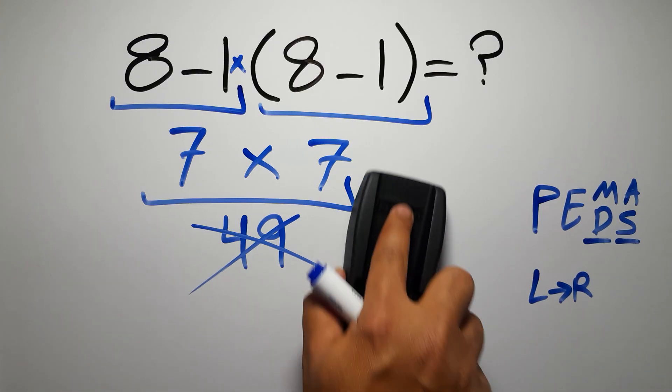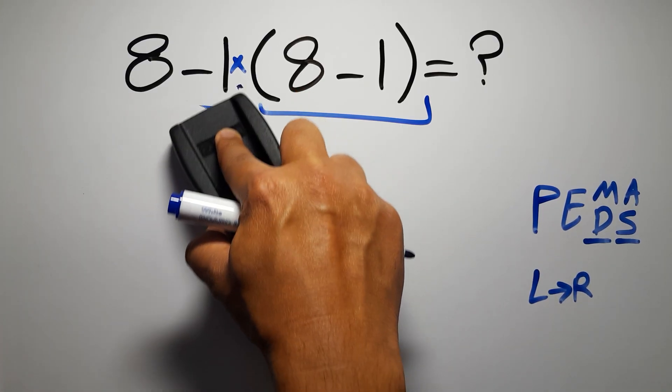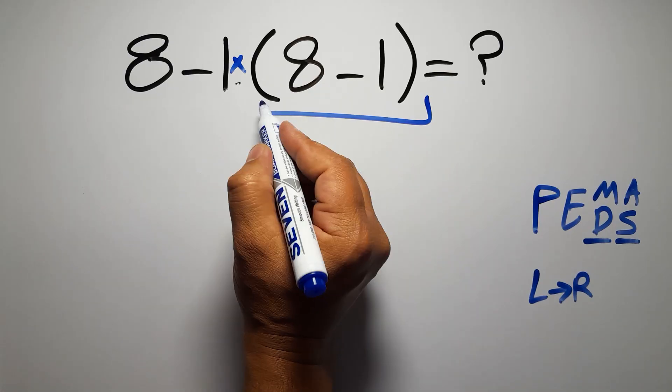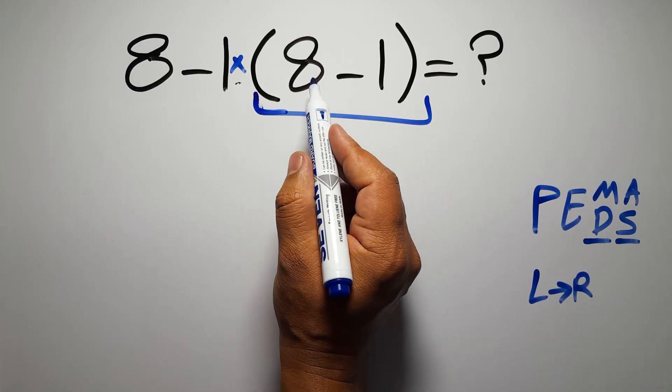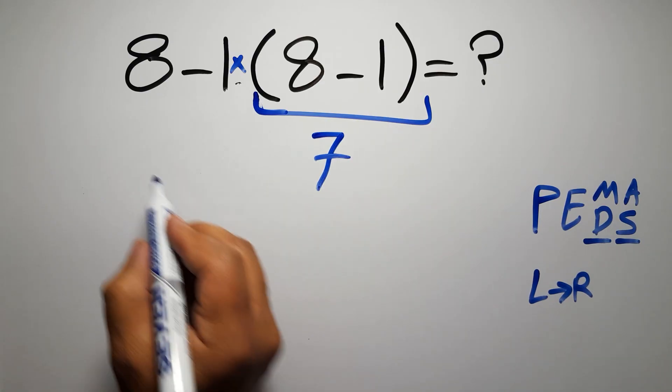So first, this parentheses: inside these parentheses we have 8 minus 1, which gives us 7, so we get 8 minus 1 times 7.